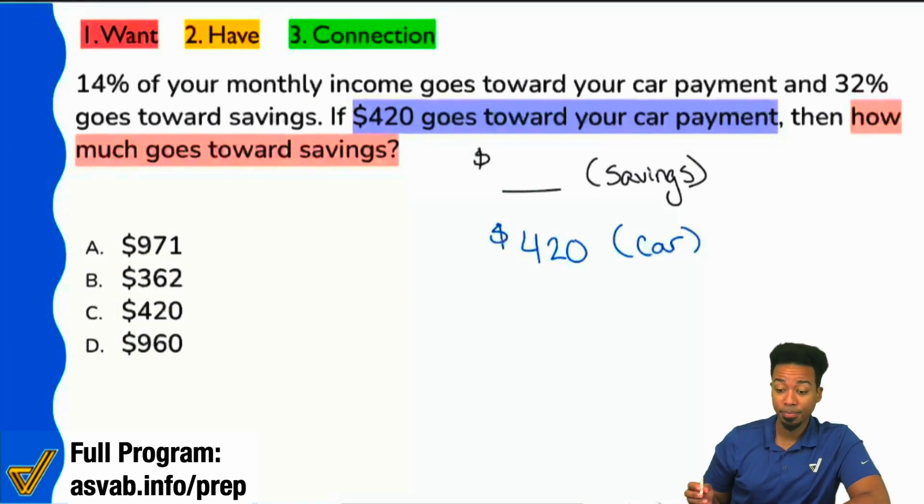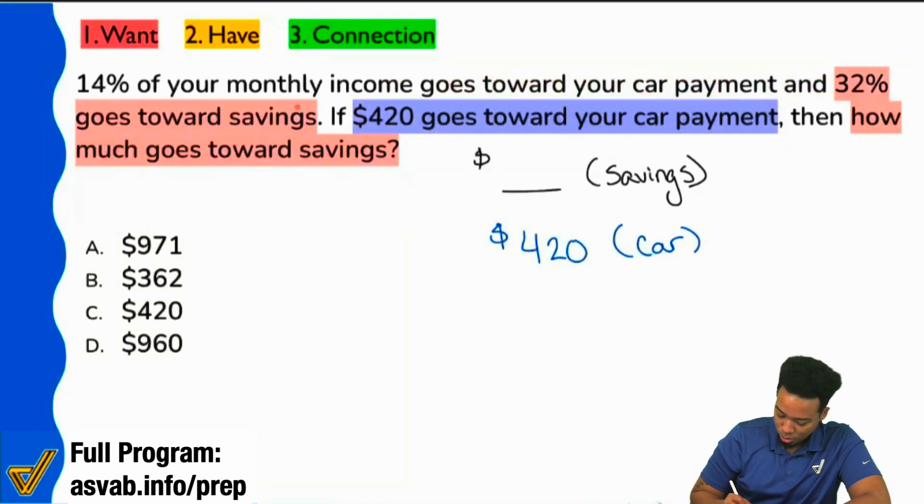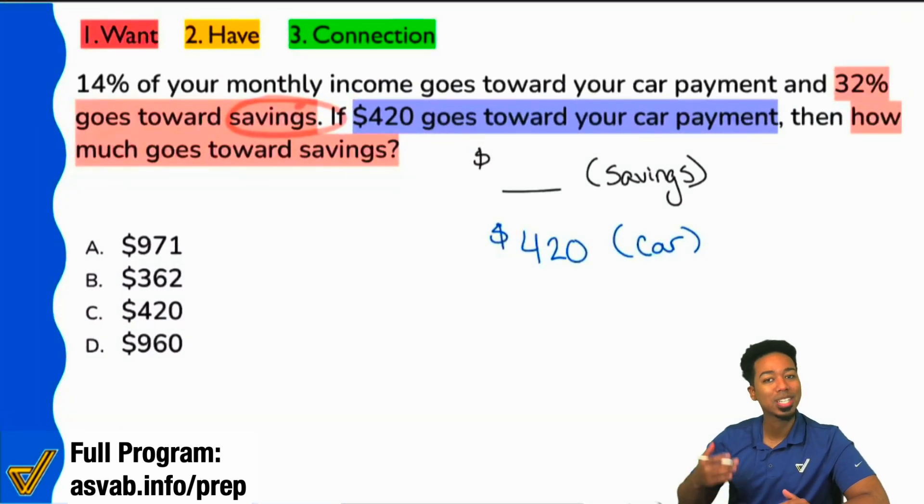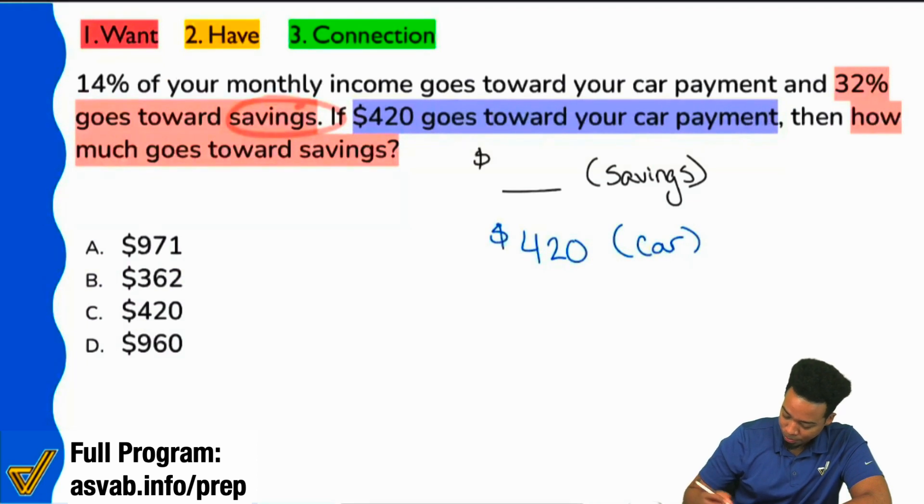Yeah, the 32%, that's what corresponds with savings. So right here, 32%, it says goes towards savings. So that's how we know we're in a good spot. That's how we know we can represent that right over here. That represents, that corresponds with 32%.